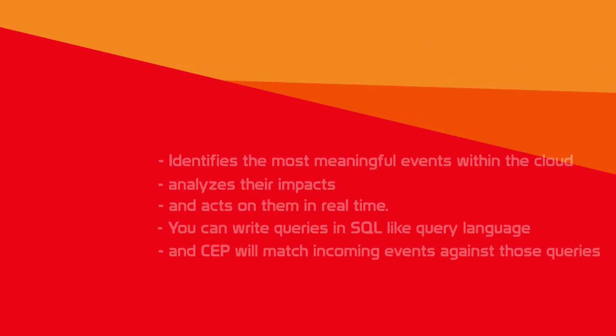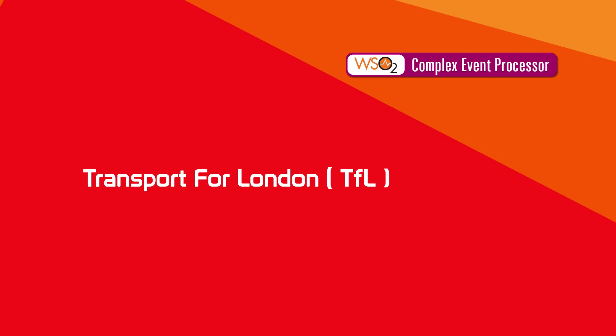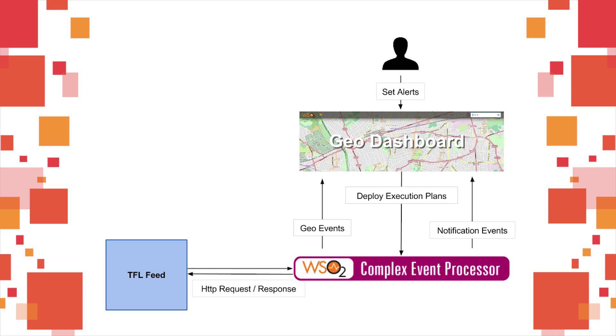Transport for London, or TFL, provides several real-time feeds about the London Transport Network. We will use WSO2 CEP to analyze TFL data that contains details such as latitude and longitude of bus stops, travel times of buses, and traffic data. We will use the WSO2 CEP Geo Dashboard to create queries for conditions such as speed alerts and traffic alerts, and deploy them in WSO2 CEP.